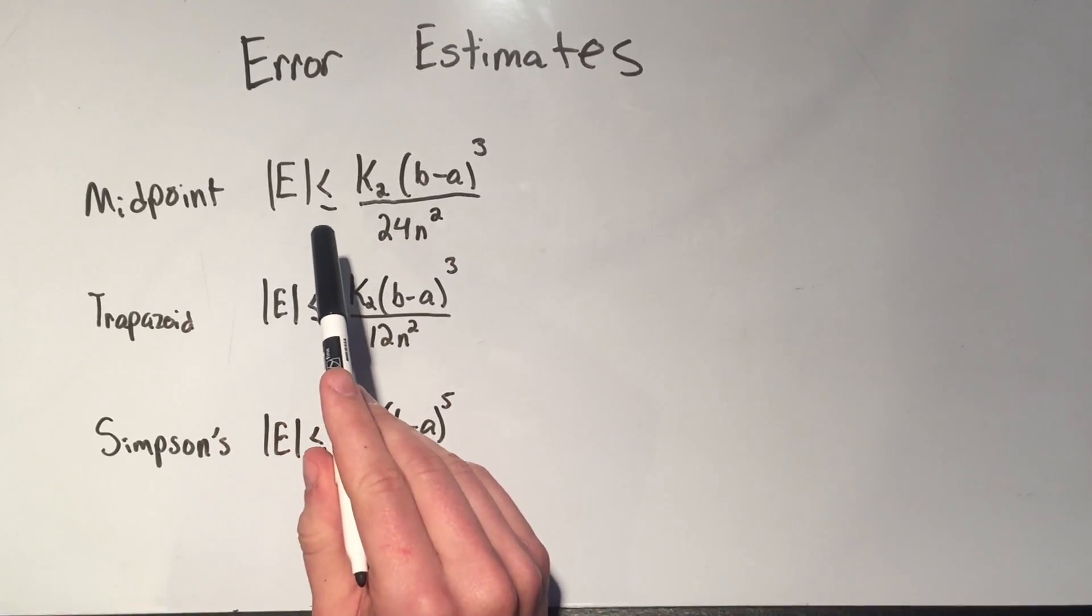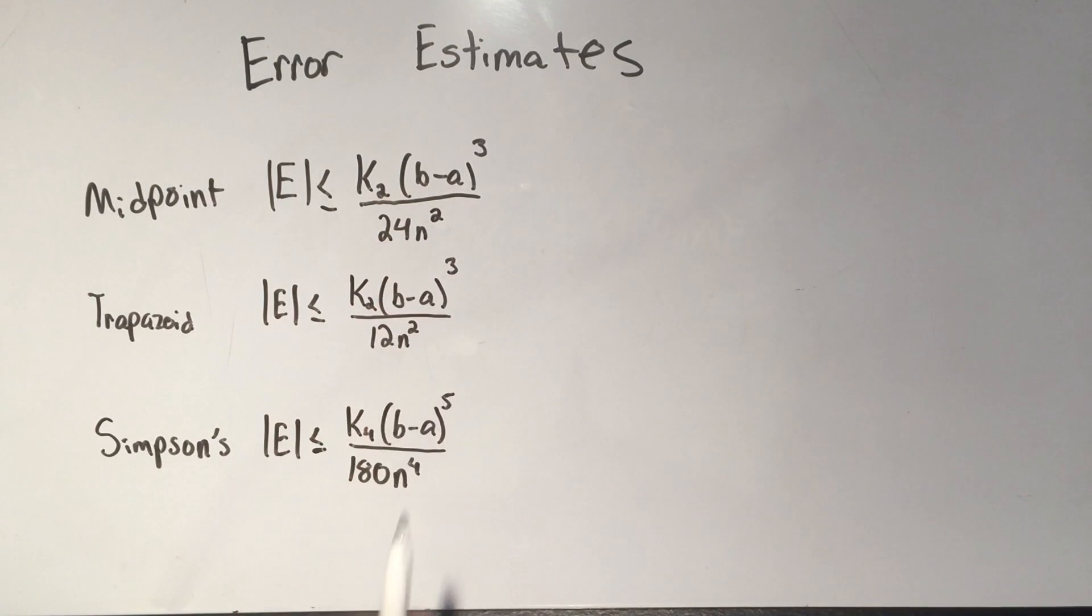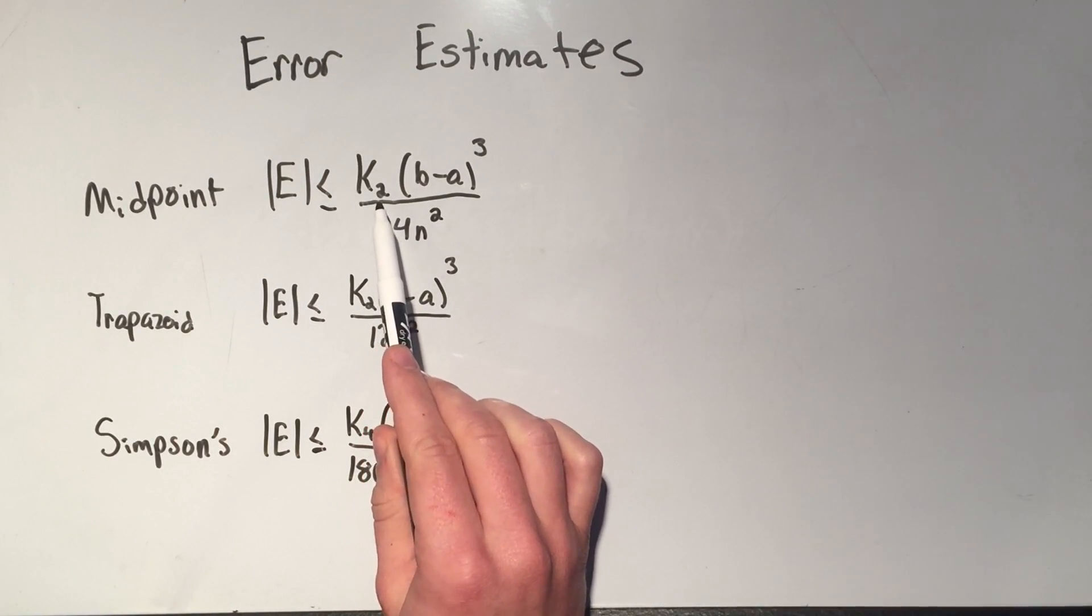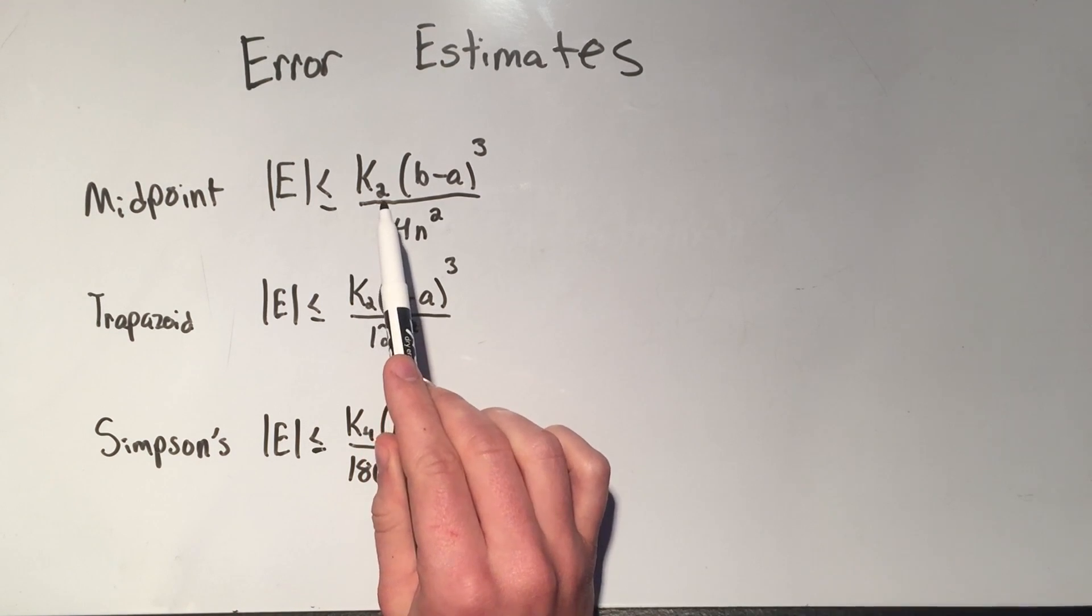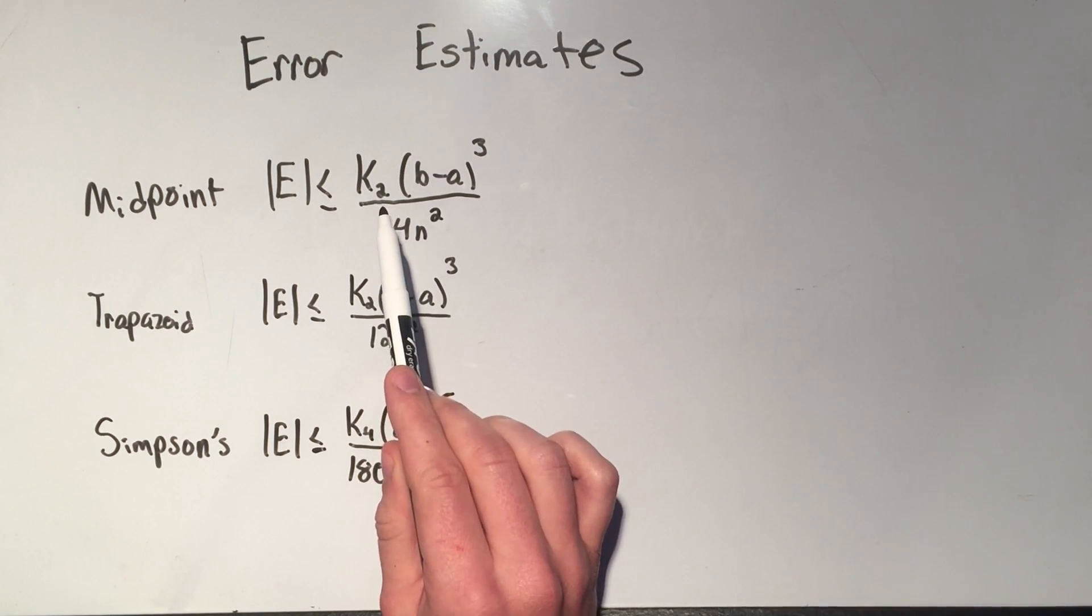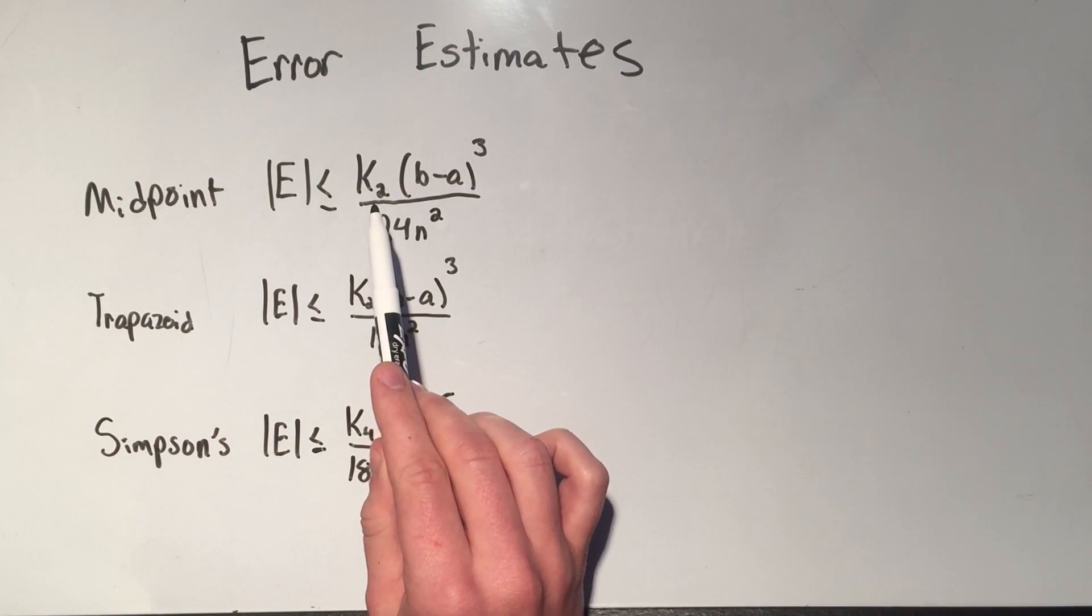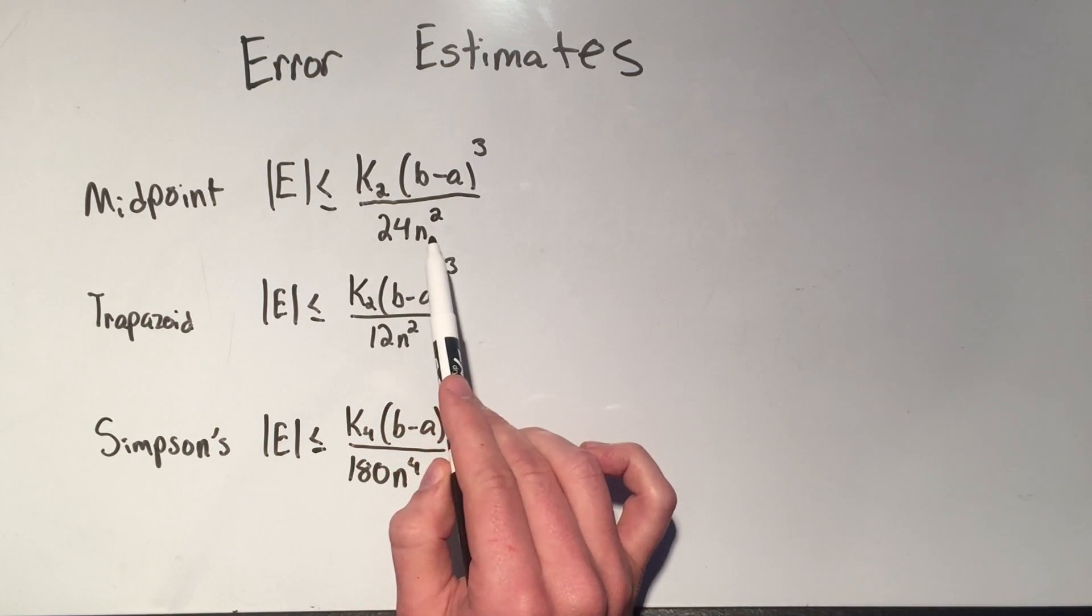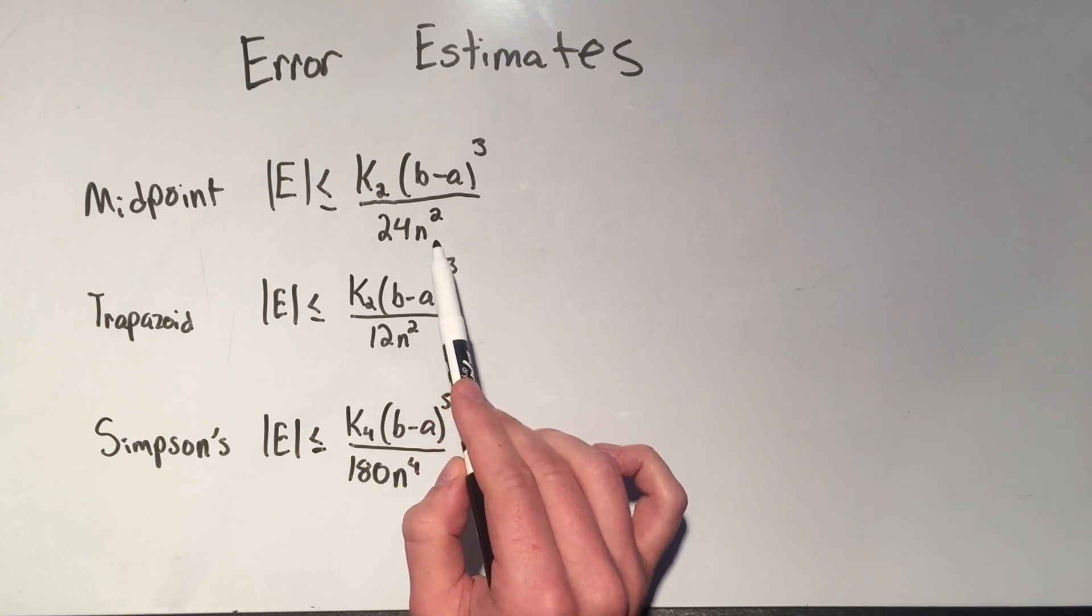The midpoint error, and you'll notice I've got this in the absolute value symbol. All of these have absolute value of the error, and that's simply because your estimate might be an overestimate or an underestimate, and we're not really sure which, so we just say that the error is that much in either direction. So the error has to be less than or equal to k₂. Now k₂ is the maximum value of the second derivative of your function, times b minus a, well we're familiar with b minus a, that's the right endpoint minus the left endpoint, cubed over 24n², and remember n is the number of rectangles, or the number of subintervals.